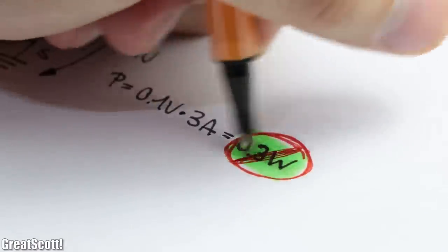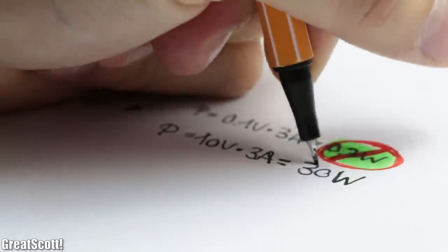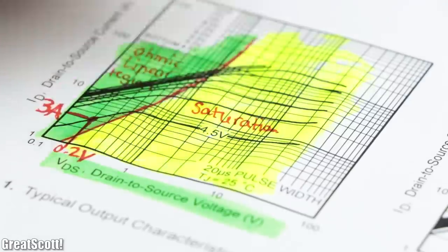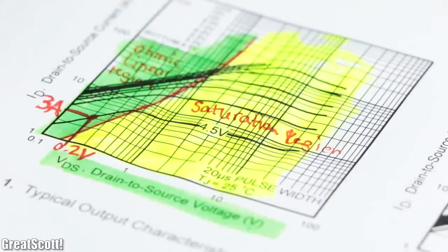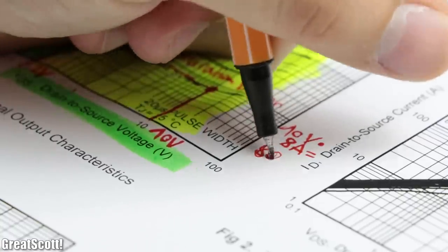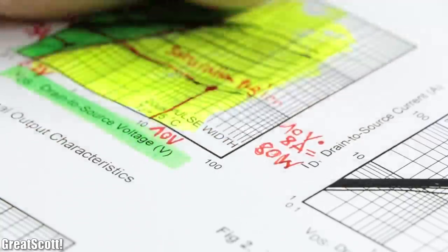But that is not what we want. We want to get lots of power losses across the MOSFET, which means we have to use it in its saturation region on the right side. There we got high drain to source voltage drops and thus big power losses.